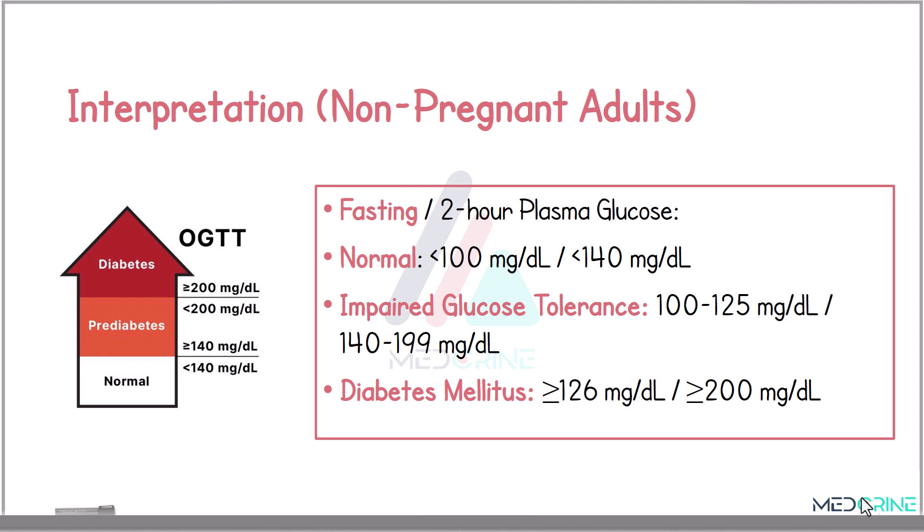Individuals who have blood sugar levels above normal glucose tolerance but below the diabetes diagnosis threshold have an increased risk of developing type 2 diabetes mellitus. This transitional range is known as pre-diabetes, and it includes impaired fasting glucose, where fasting blood sugar levels are greater than or equal to 100 mg/dL and less than 126 mg/dL.